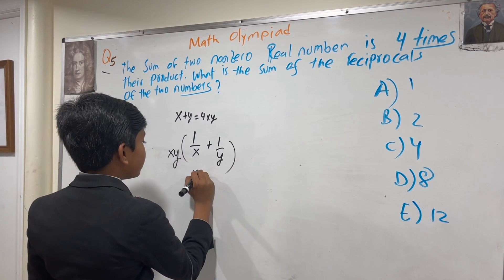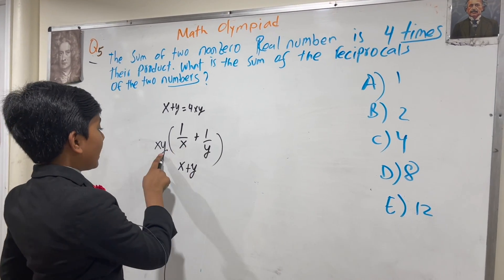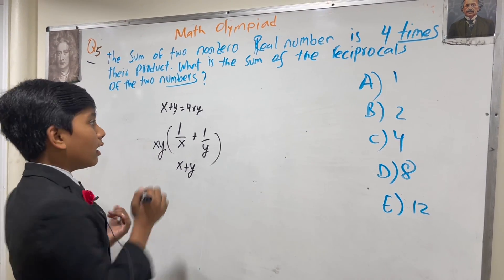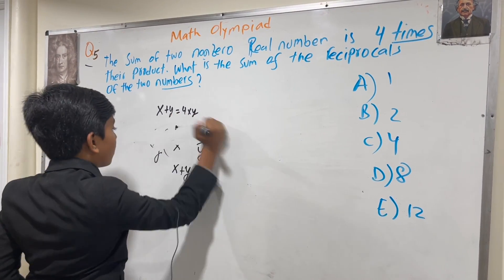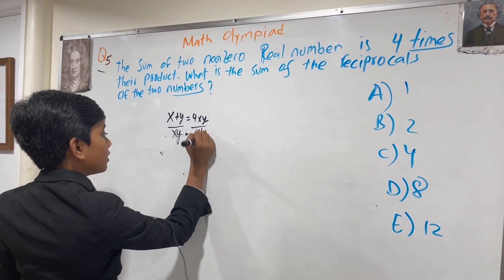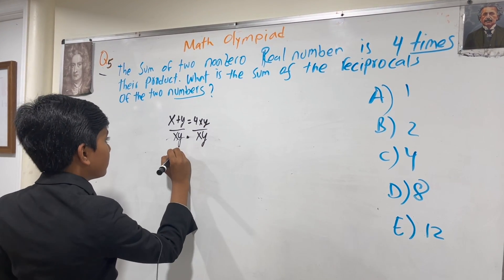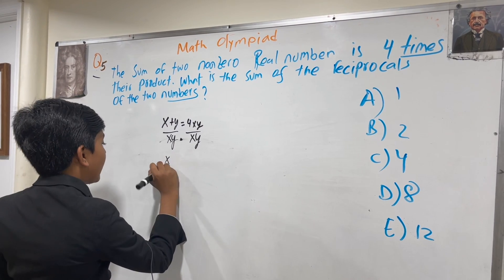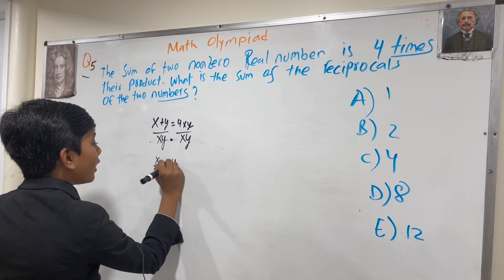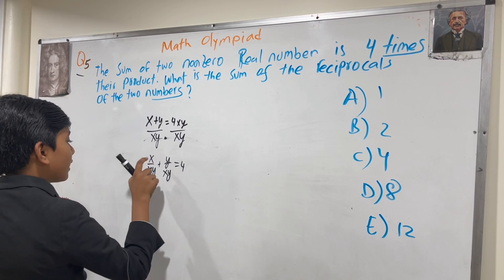Multiplying by XY gives you X plus Y. So all we have to do is find X plus Y divided by XY. That means we get X over XY plus Y over XY, and that's equal to 4.